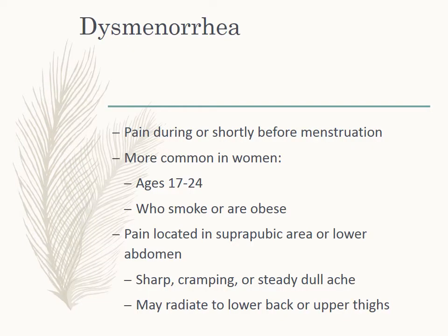Dysmenorrhea is pain during or shortly before menstruation. It is very common and more common in women ages 17 to 24, and in women who smoke or are obese. Pain is located in the suprapubic area or lower abdomen — they're going to report that it's sharp, cramping, a steady dull ache, and may radiate to the lower back or upper thighs. About 30 to 40% of women report some level of discomfort. It does improve in most women with age or after a full-term pregnancy, and it is characterized as primary or secondary.